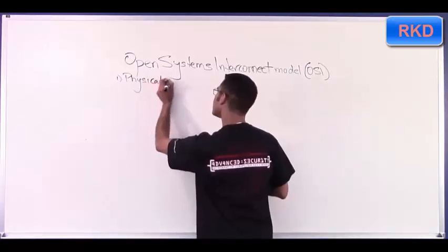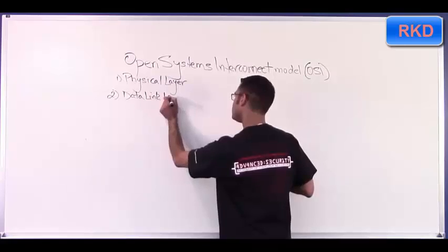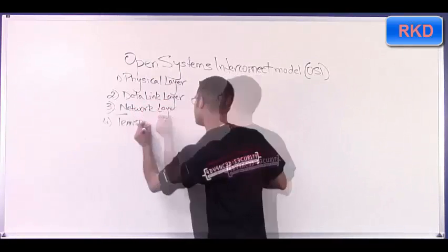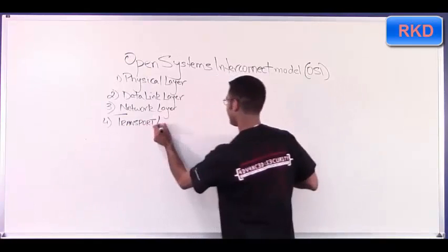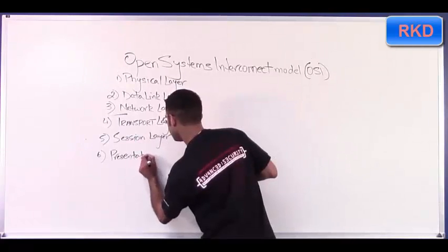Layer one is your physical layer. Layer two is your data link layer. Layer three is your network layer. Layer four is your transport layer. Five is your session. Six is your presentation.